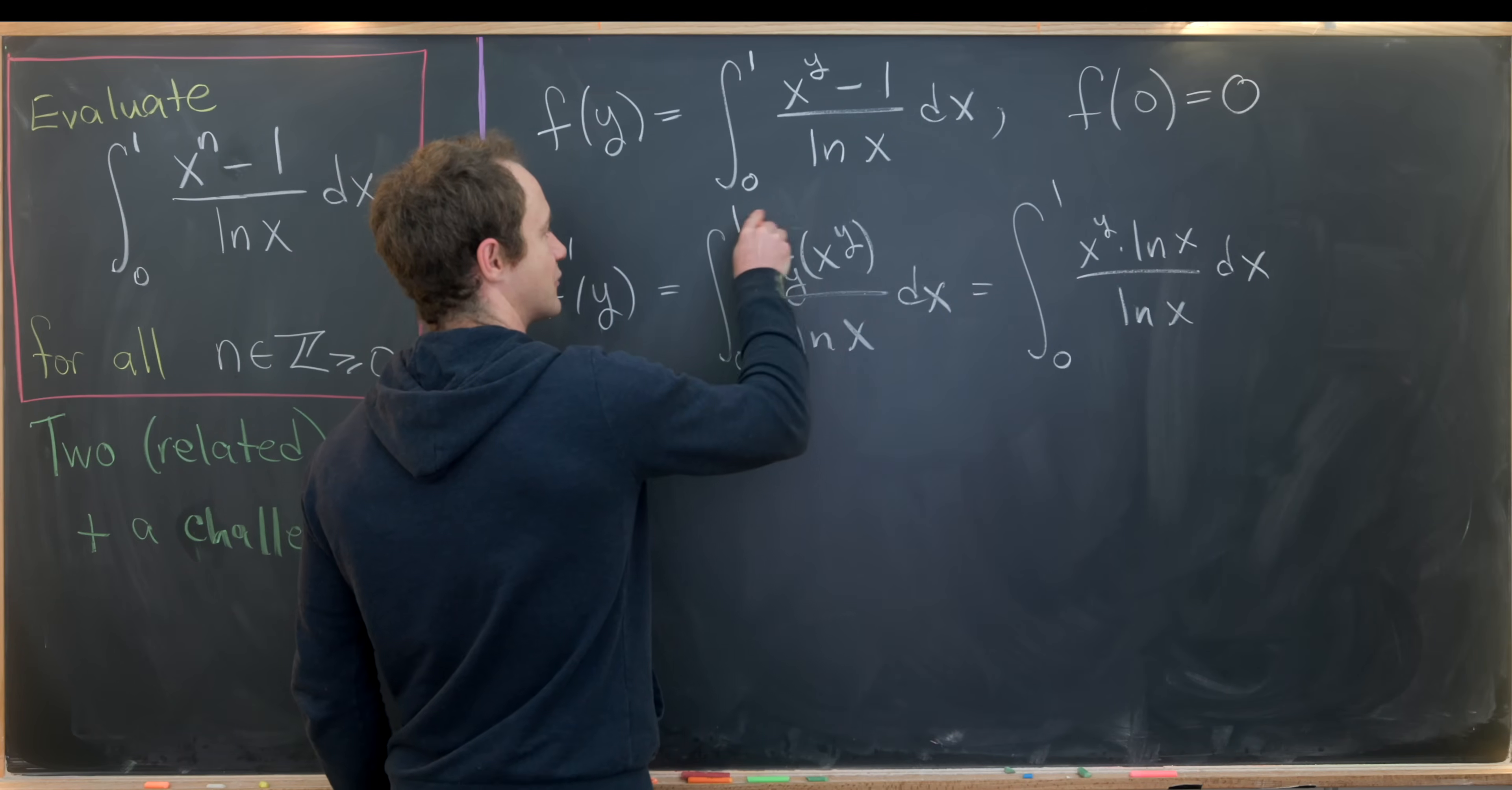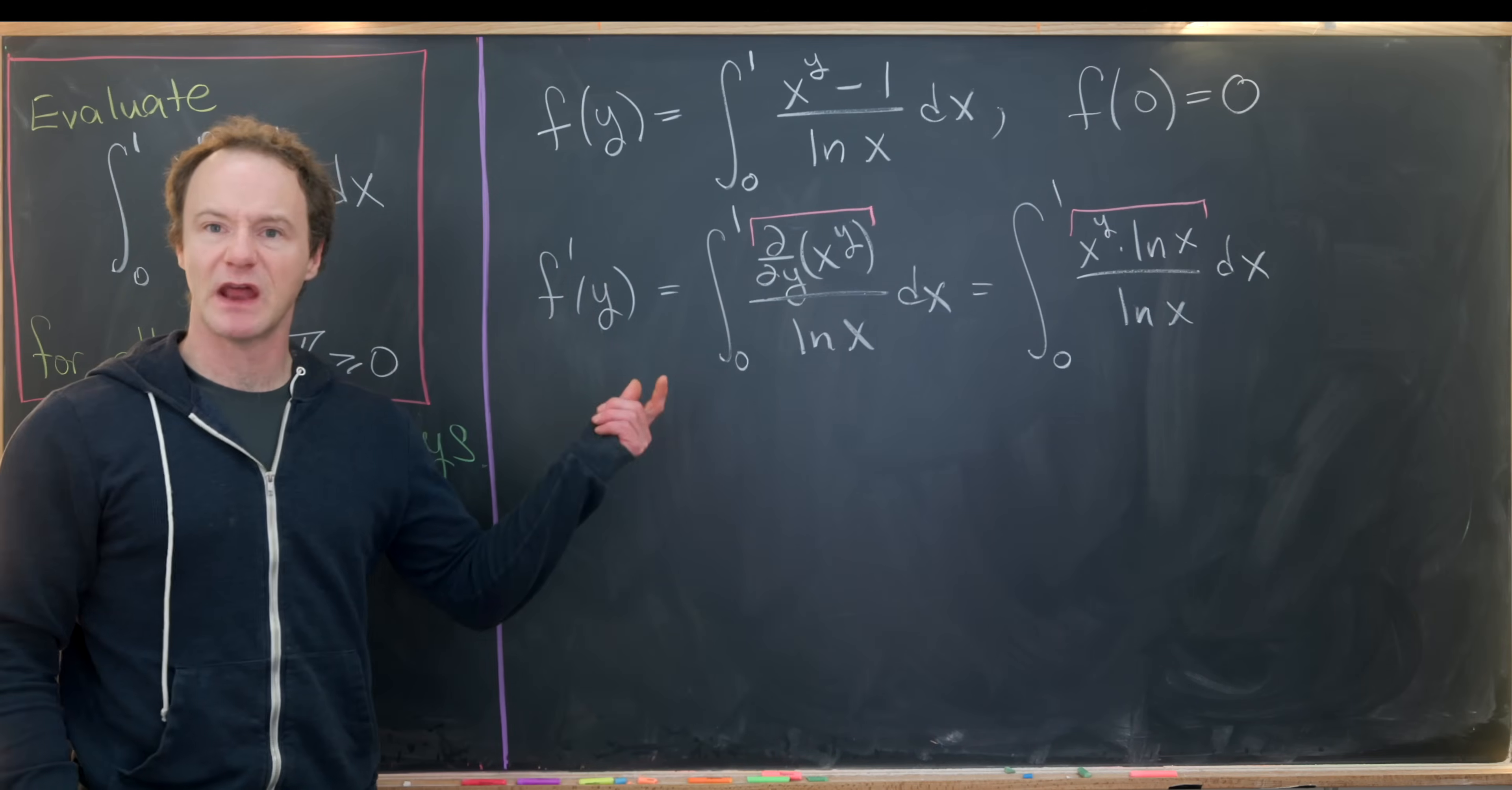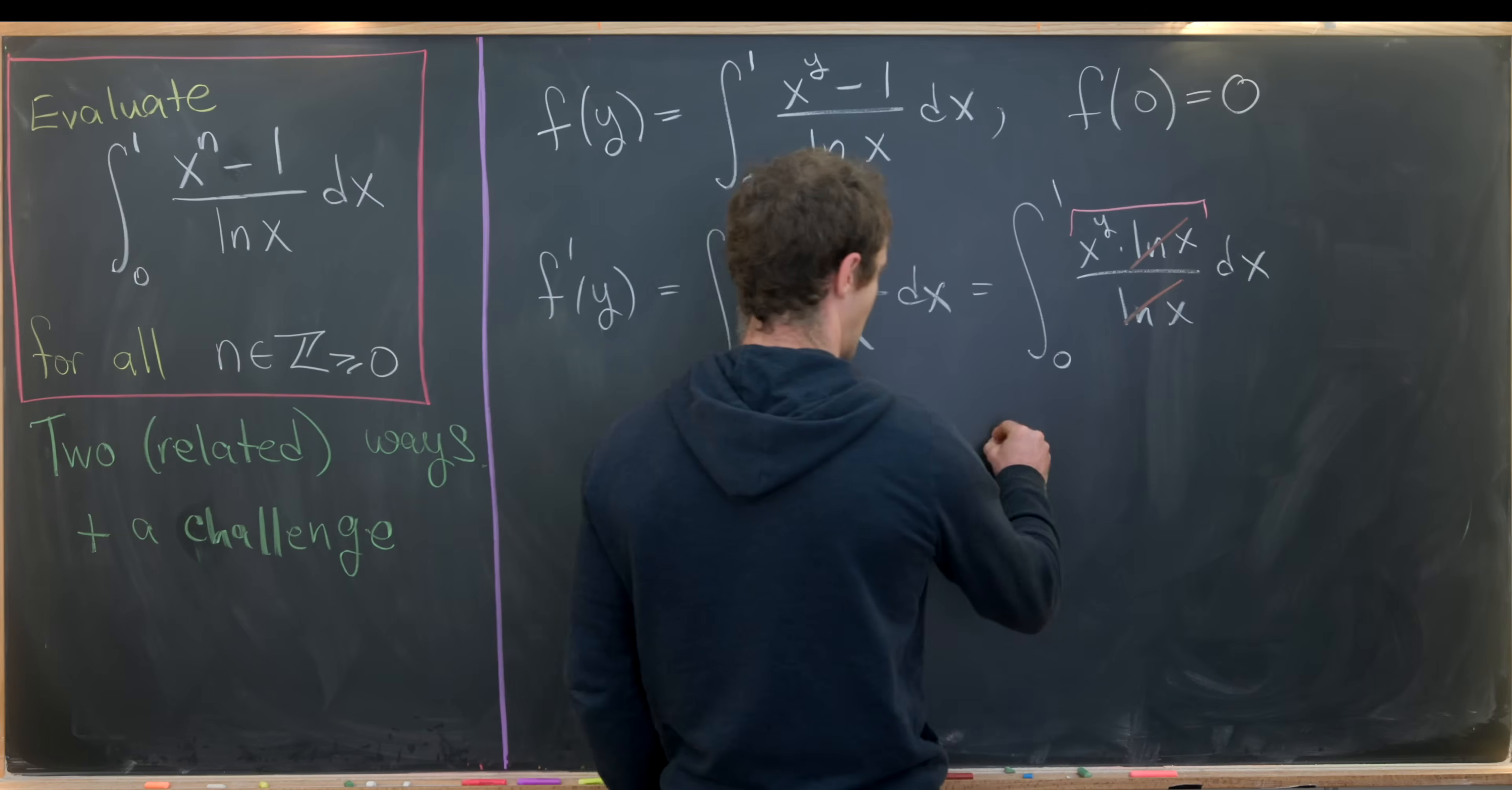And again, like I said, that's from the standard derivative rule that this derivative, which I've overlined in pink, turns into this. But now we can do some standard cancellation. This natural log of x will cancel this natural log of x. That leaves us with x to the y.